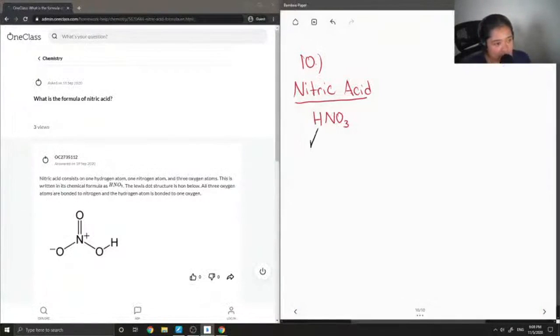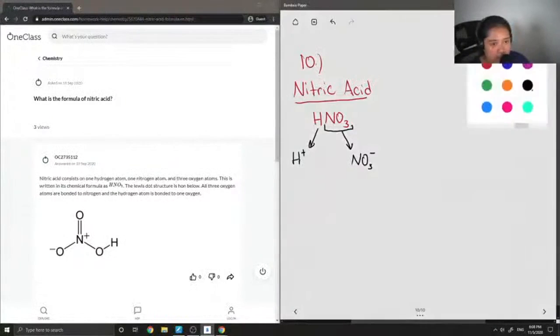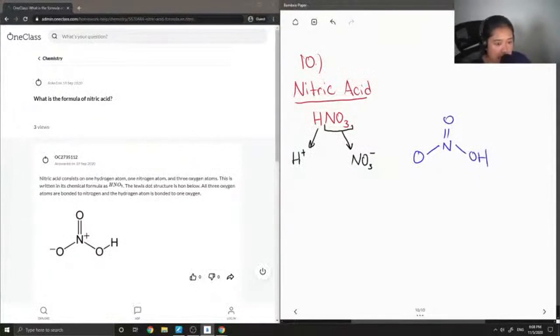So if we were to break it apart into its ions, it would be H plus, and this is a polyatomic ion. The whole thing is NO3 minus. So if I were to draw out the structure of nitric acid, it would look a little something like this.